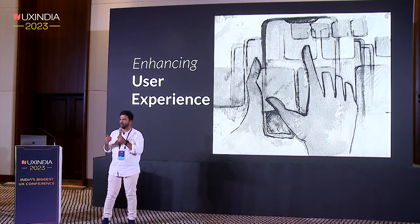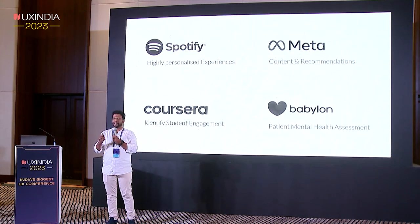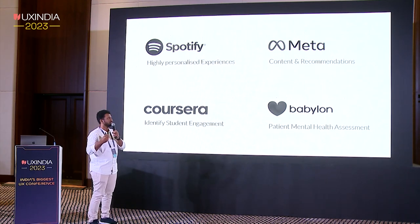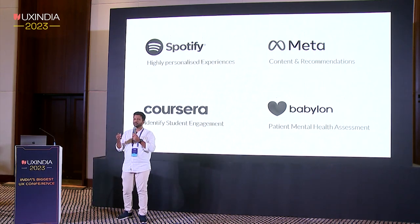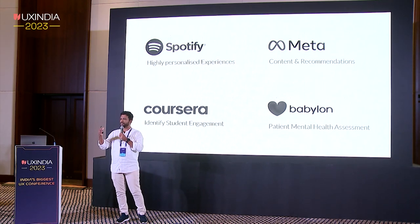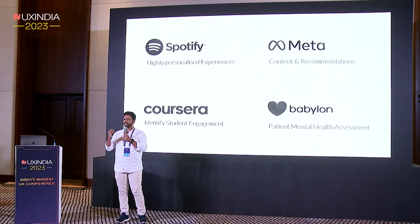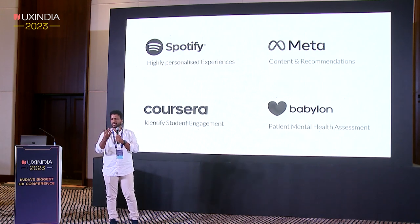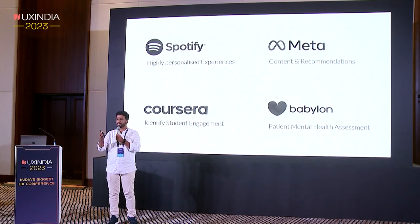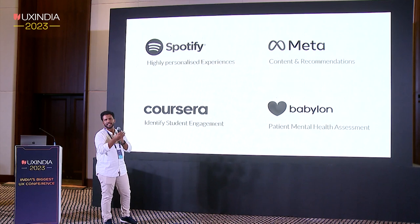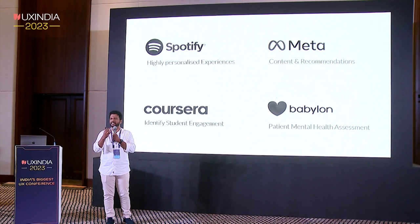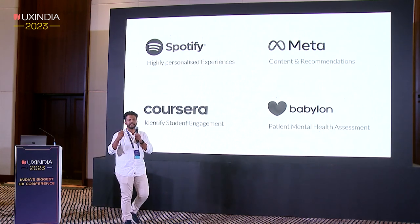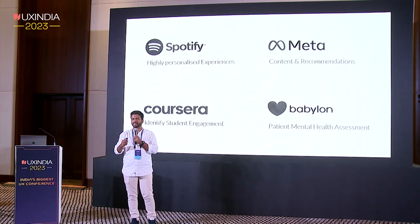As UX designers, what would these technologies mean? For example, if you're using Spotify and you're not in a good mood, you'd look for calm or serene music. Facial emotion technology would understand your emotions right away via infrared cameras, analyze your emotional state, and recommend specific music. A Coursera app could detect whether you're engaged or uninterested in a course. In mental health, a patient's mental state could be reported to doctors. And platforms like Meta could deliver content based on your emotional state. That's it from my side — thank you.